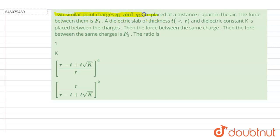Two similar point charges q1 and q2 are placed at a distance r apart in air. The force between them is F1. A dielectric slab of thickness t, which is less than r, and dielectric constant k is placed between the charges. Then the force between the same charges is F2.